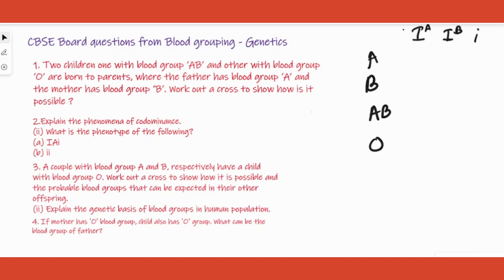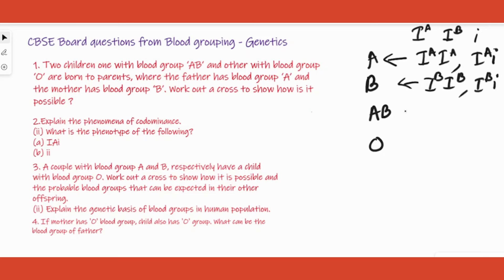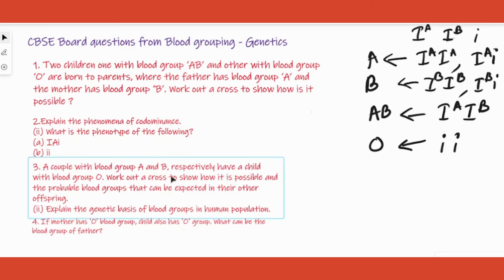Blood group A is the result of Ia and Ia together, or Ia and i. Similarly for B: IbIb or Ibi. AB is possible only if Ia and Ib come together. O is possible only if i and i — the recessive allele — come together. Keep this in mind before answering all the applicatory type questions.